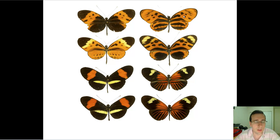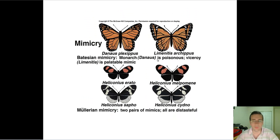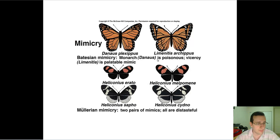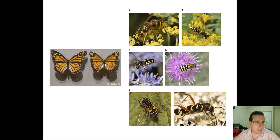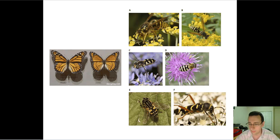Müllerian mimicry was suggested by a scientist called Müller to explain what Bates couldn't — why sometimes two harmful species mimic each other. So those are the two main kinds of mimicry: Batesian mimicry, when something palatable copies something poisonous and gains the same benefits, and Müllerian mimicry, when two distasteful species copy each other to jointly send a message that they should all be avoided. Remember that in the bee example, some are both toxic, making it a mixture of Batesian and Müllerian mimicry, and the viceroy/monarch example is actually Müllerian, not Batesian.